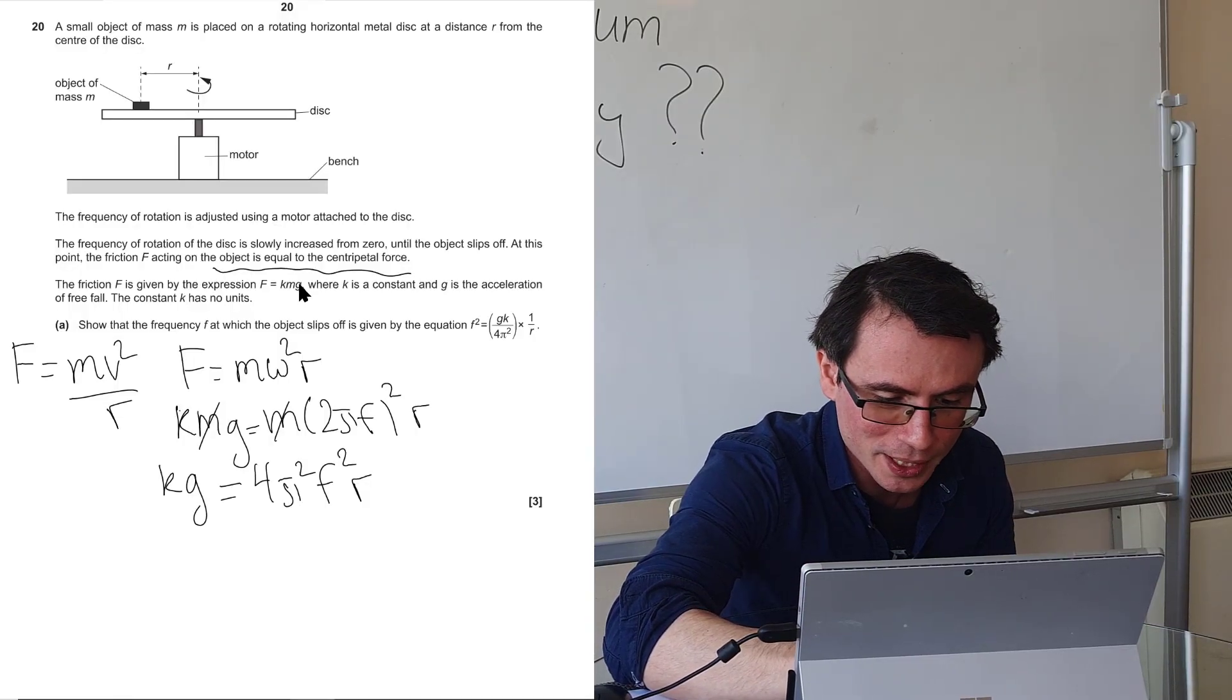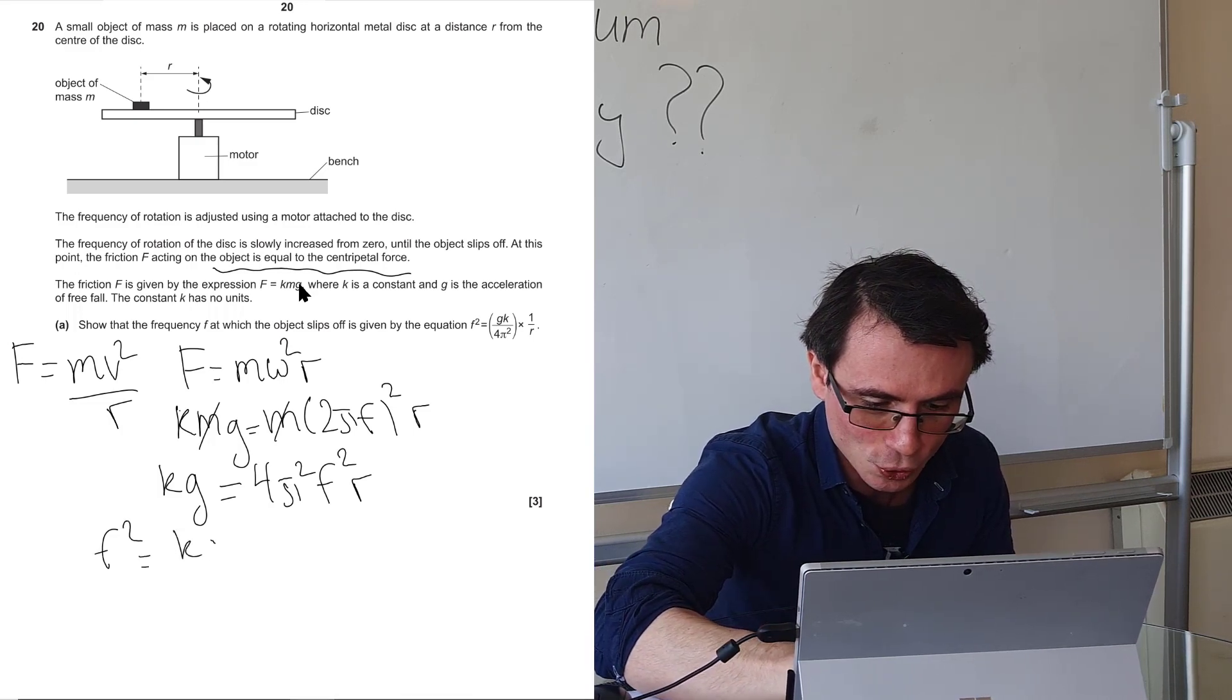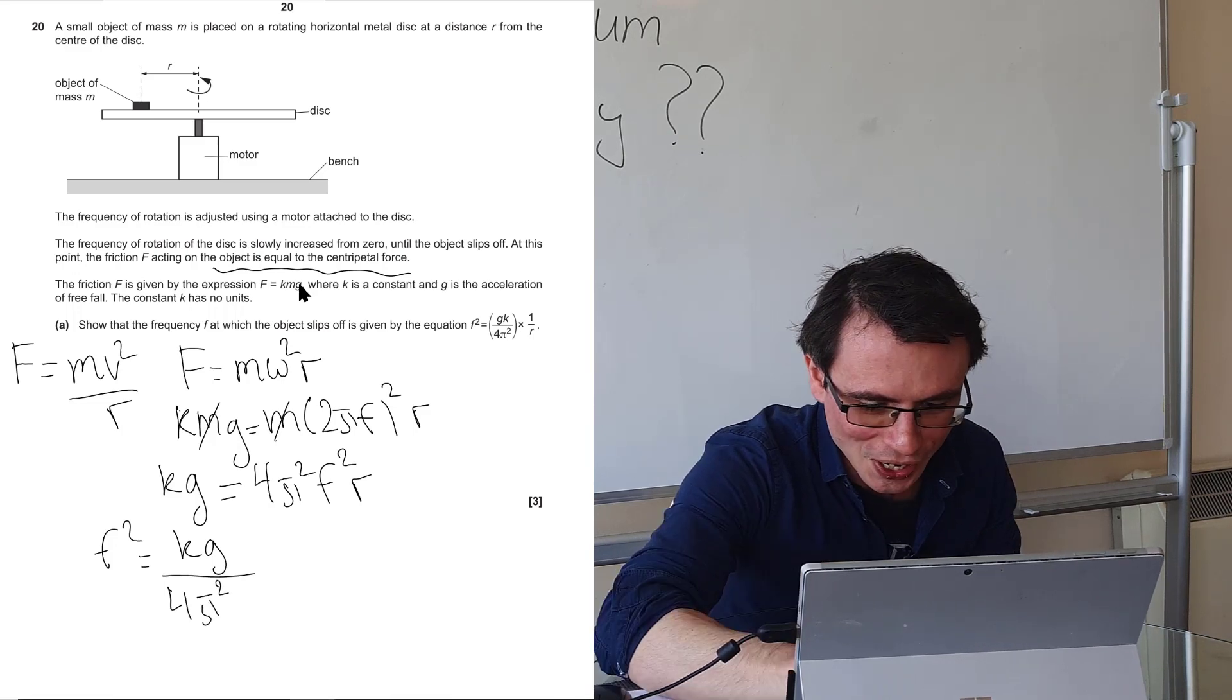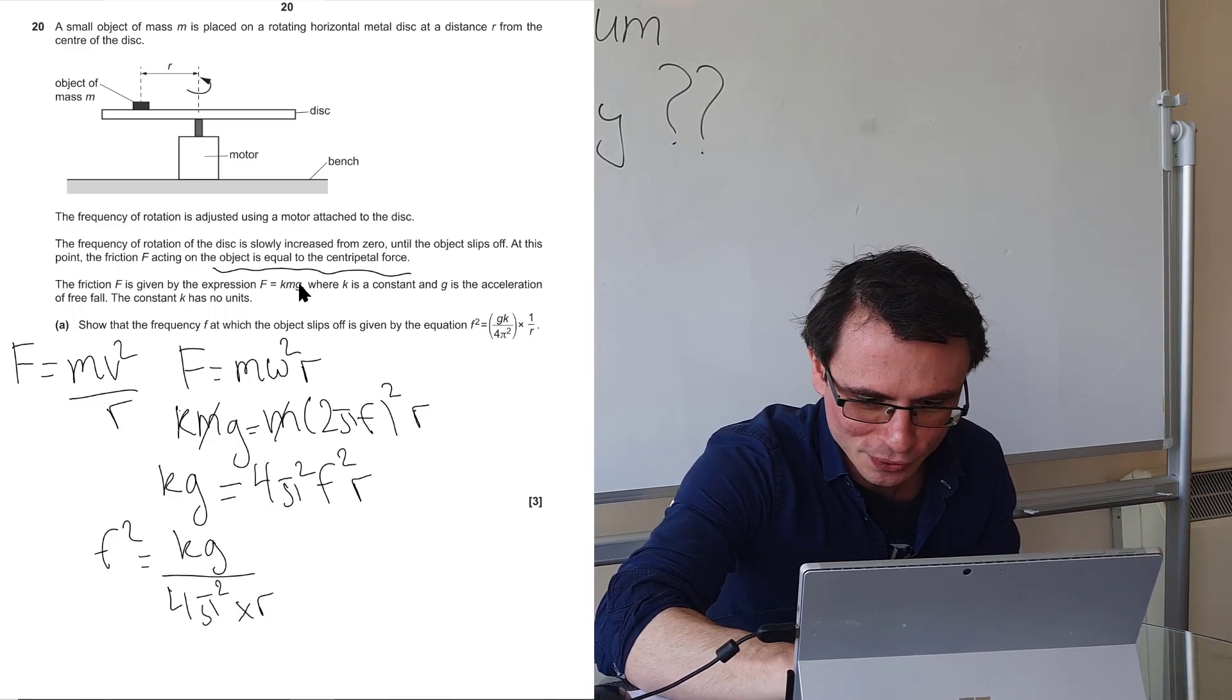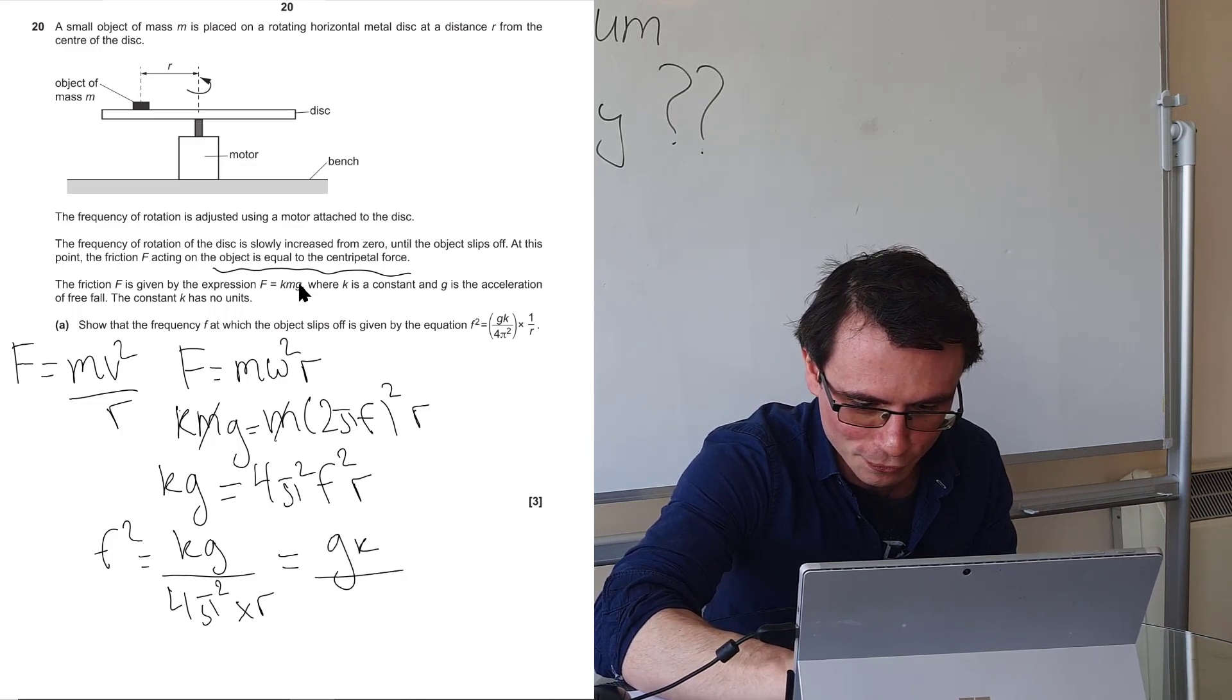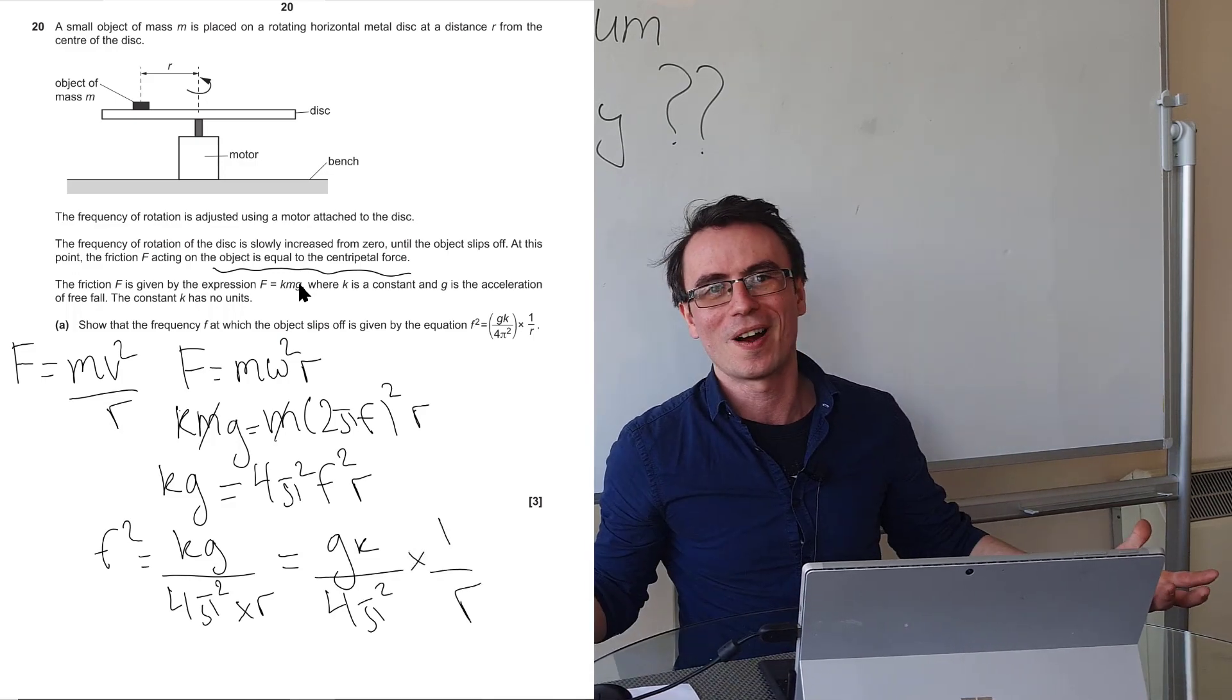And if we do so we are going to get that f squared is equal to kg over 4 pi squared times r which is of course equal to the expression that I've provided which is gk over 4 pi squared times 1 over r.